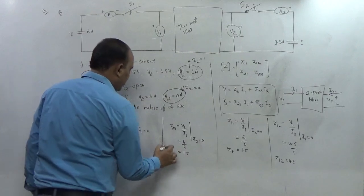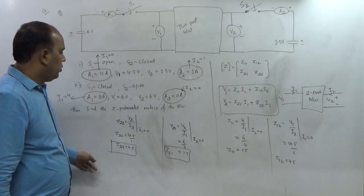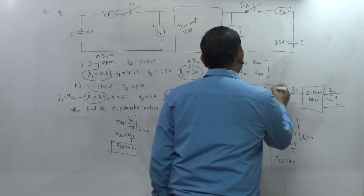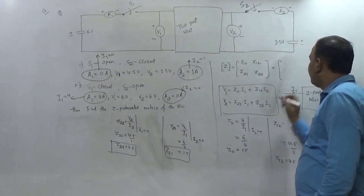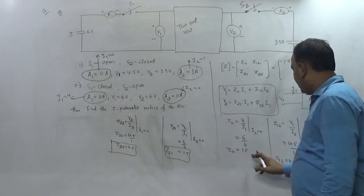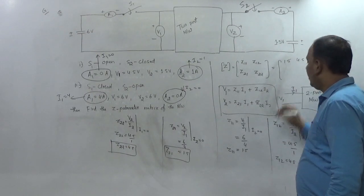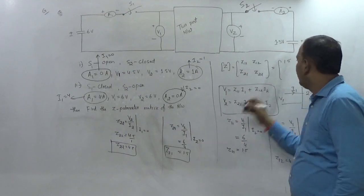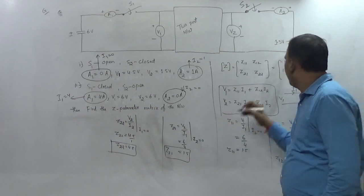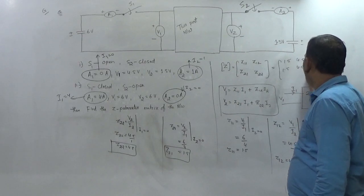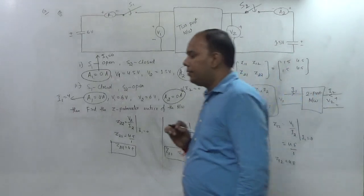So the final Z-parameter matrix is: Z11 = 1.5, Z12 = 4.5, Z21 = 1.5, and Z22 = 4.5. This completes the solution.